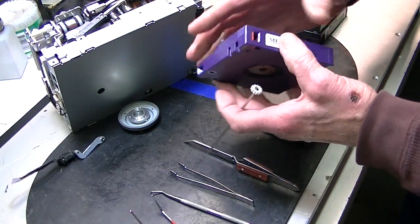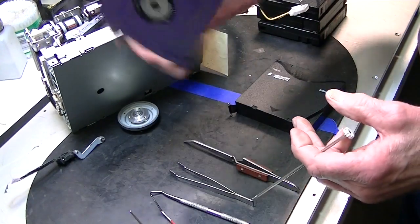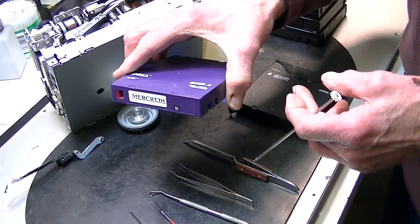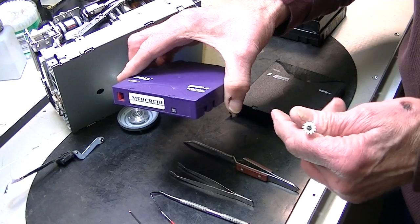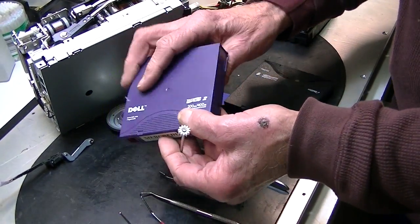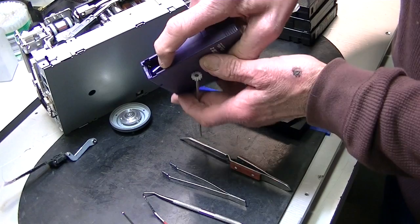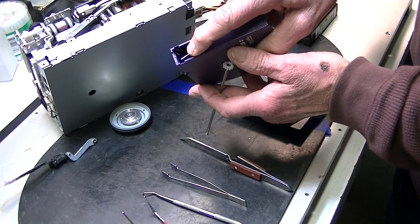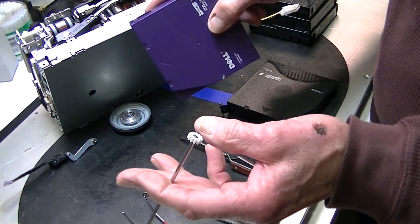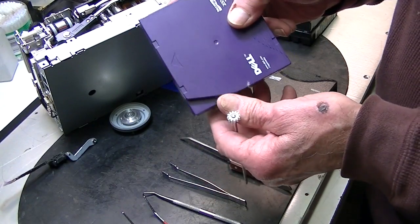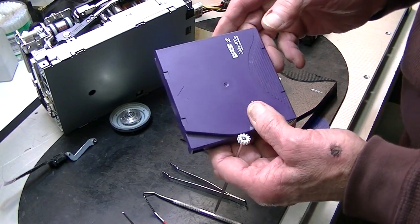This particular unit, if you listen, there's something's not right in there, okay? So the leader pin is probably flopping around and when we look, sure enough, the leader pin's not where it should be. Now you can shake it and you might hear it and you might not. You still don't know if it's in place.